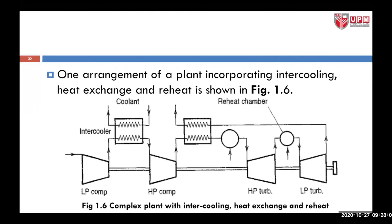In this particular case, the arrangement is much more complex. Recall that in figure 1.1 you have only one compressor, one combustion chamber, and one turbine. In this arrangement, a plant incorporating intercooling, a heat exchanger, and reheat is shown. You have an intercooler, a heat exchanger, a low-pressure compressor, a high-pressure compressor, a high-pressure turbine, and a low-pressure turbine, with two combustion processes taking place.